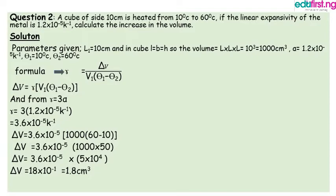Substituting into the formula: change in volume equals 3.6 times 10 to the power minus 5 multiplied by 1000 multiplied by (60 minus 10). When we simplify, the final answer is 18 times 10 to the power minus 1, which equals 0.18. Note that 18 times 10 to the power minus 1 equals 0.18, and in standard form this is 1.8 cm cubed.